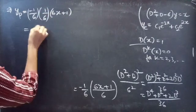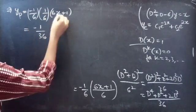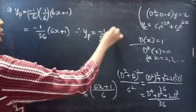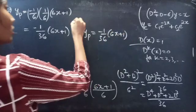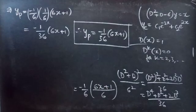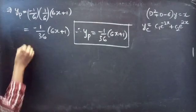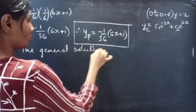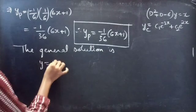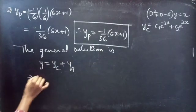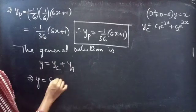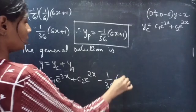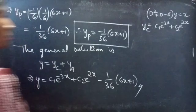Now let's write the general solution. The general solution is given by y = yc + yp, so y = c₁e^(−3x) + c₂e^(2x) − (6x + 1)/36, which is the required solution.